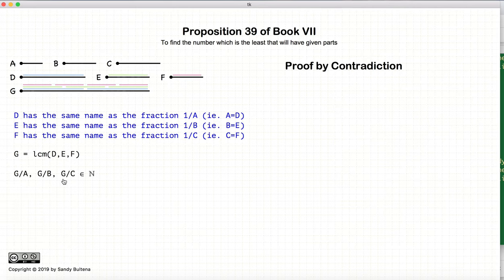I've just rewritten the salient points here. So now we're going to prove that if G is the lowest common denominator, that G/A, G/B, and G/C exist, and that G is the smallest number that this is true. And we're going to prove it by contradiction.